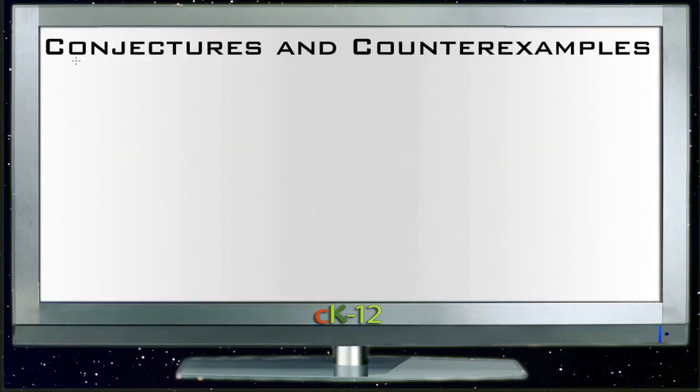Okay, let's take a look at the examples for conjectures and counterexamples. Recall that a conjecture is an educated guess based on evidence that you've accrued through, generally through repeated trials of the same experiment. And a counterexample is an example that proves a conjecture wrong, so something that goes against what you've made an educated guess about.